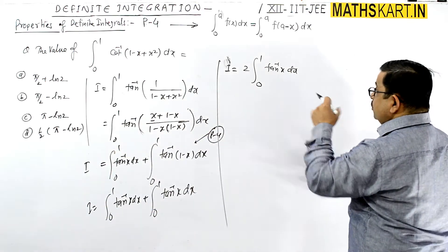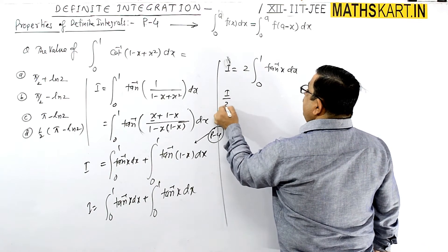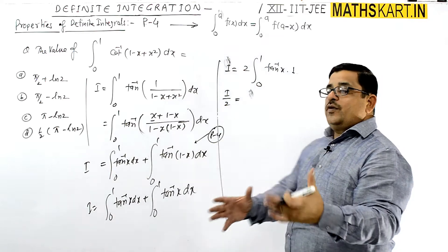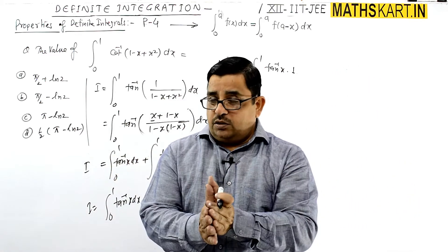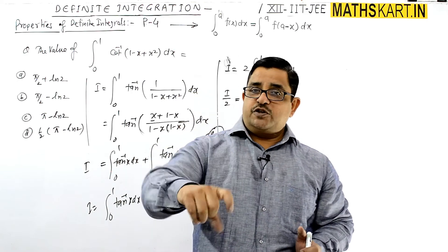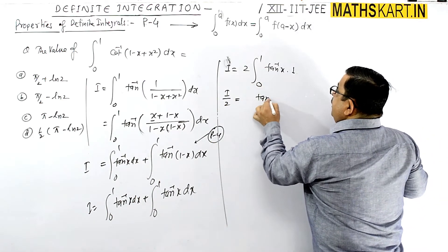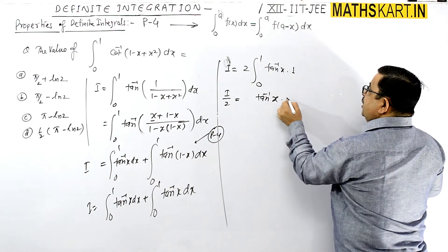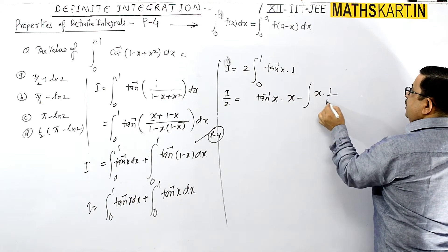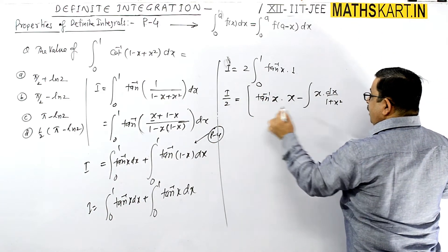Using the product formula directly, we integrate: tan inverse x times 1 — the integration of 1 is x, so we get x times tan inverse x, minus the integral of x times the derivative of tan inverse x dx. The limit 0 to 1 applies to the entire expression.